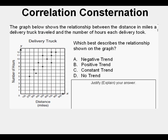The graph shows the relationship between the distance in miles a delivery truck traveled and the number of hours each delivery took. Which best describes the relationship shown on the graph? A negative trend, B positive trend, C constant trend, D no trend. Here's a red line drawn to match the points as well as possible. Which way is the line going from left to right? It's going up, which means the correlation or trend is positive. Answer B.